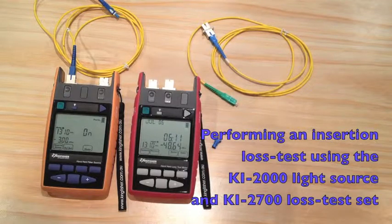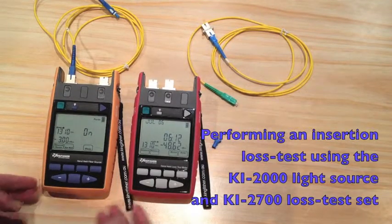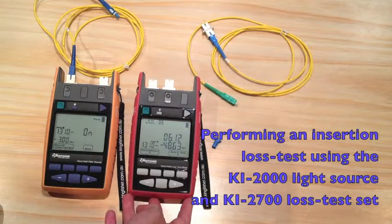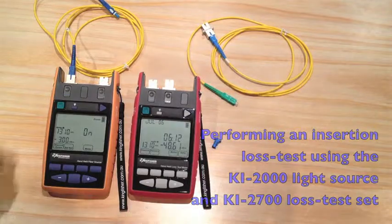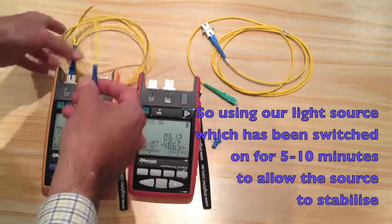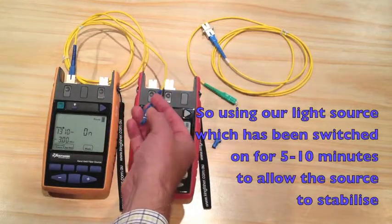Performing an insertion loss test using the KI2000 light source and the KI2700 loss test set. Using our light source, which has been switched on for 5 to 10 minutes to allow the source to stabilize.